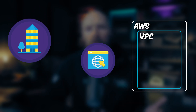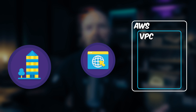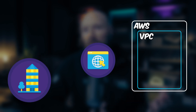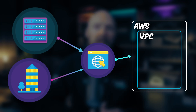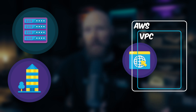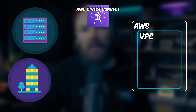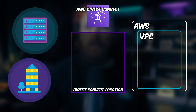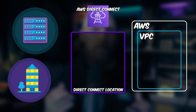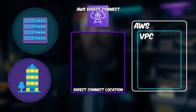So how do we connect our large corporate office sites or traditional data centers to our AWS VPC without using the public internet? We can use AWS Direct Connect as a connectivity solution. AWS Direct Connect allows us to establish a dedicated private network connection between our large office locations or on-premise traditional data center facilities to our AWS VPC.